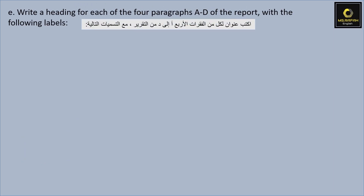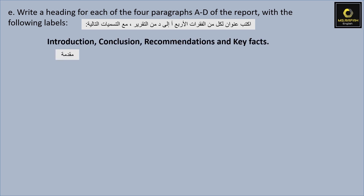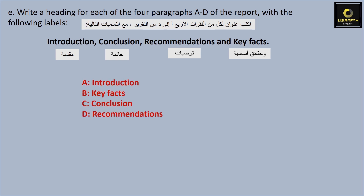Write a heading for each of the four paragraphs from A to D of the report with the following labels: we have introduction, conclusion, recommendations, and key facts. رح نحط عناوين للمقاطع. طبعا نحن نعرف أنه بيجي Introduction أول، then Key Facts, then Conclusion, and last Recommendations. رح نشوفهم بعد شوي.